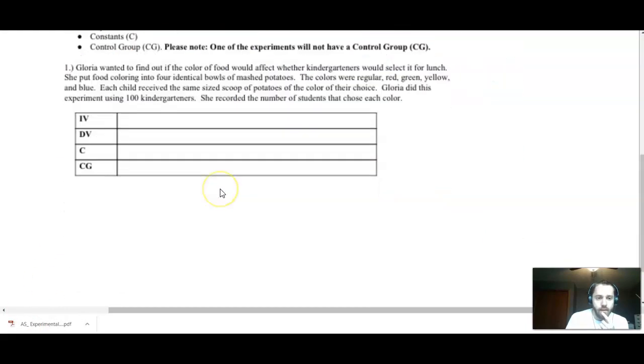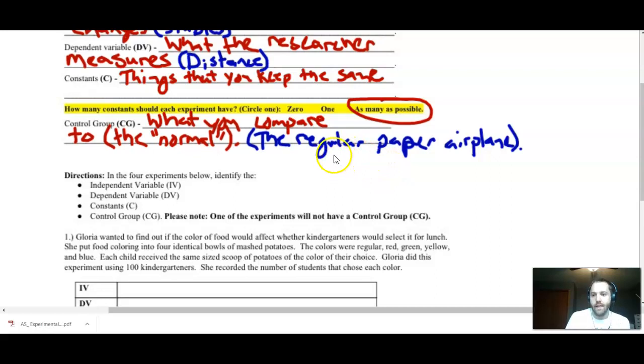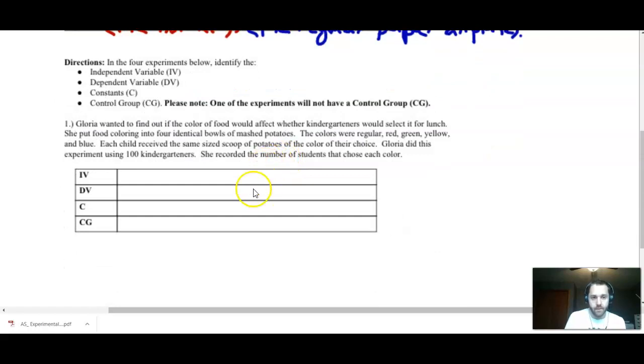So now continuing on, this assignment is just going to give us four other experiments. Not everything is about paper airplanes. Directions: in the four experiments below identify the independent variable, dependent variable, constants, and control group. Please note, one of the experiments will not have a control group. As great as it always is to have something to compare results to, the reality is not every experiment is going to have a really good control group. And that's okay. So biggest mistake students make in this assignment is they try and just list one constant and be done. You can't do that. You need as many constants as possible.